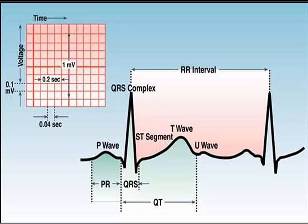The ST wave represents ventricular repolarization. The U wave's origin is not clear, but probably represents after-depolarizations in the ventricles. The PR interval is the time interval from onset of atrial depolarization, which is the P wave, to onset of ventricular depolarization, the QRS complex.